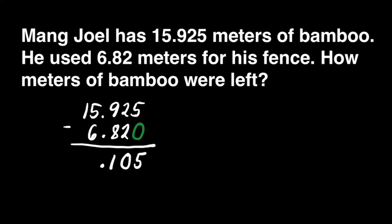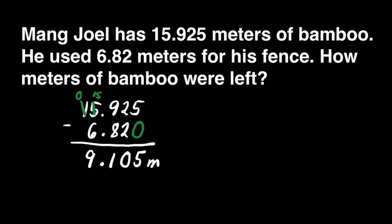5 minus 6 cannot be, so we will borrow from 1. The 1 will become 0, and 5 will become 15. 15 minus 6 is equal to 9. Our answer is 9 and 105 thousandths meters. The remaining bamboo has a length of 9 and 105 thousandths meters.